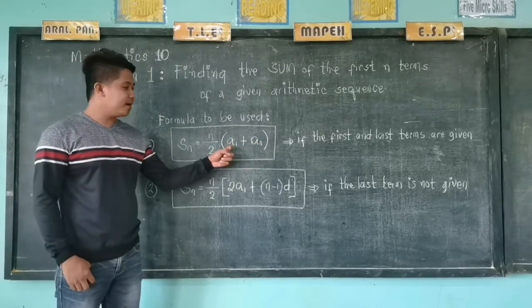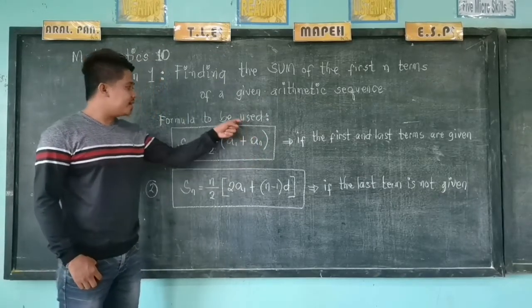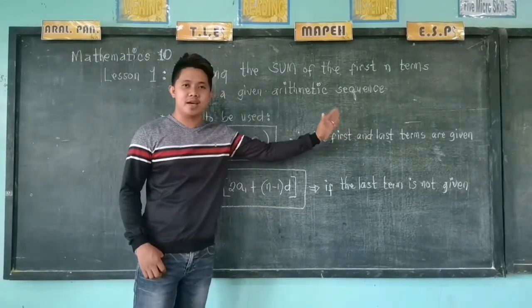a sub 1 is the first term, and then a sub n is the last term. This formula will be used if the first and last terms are given.